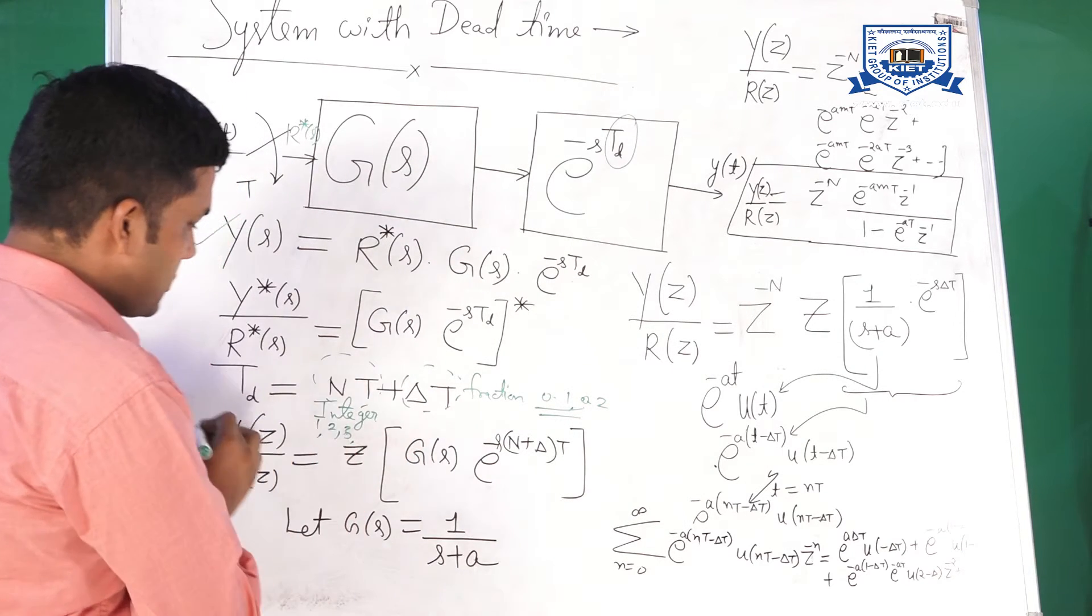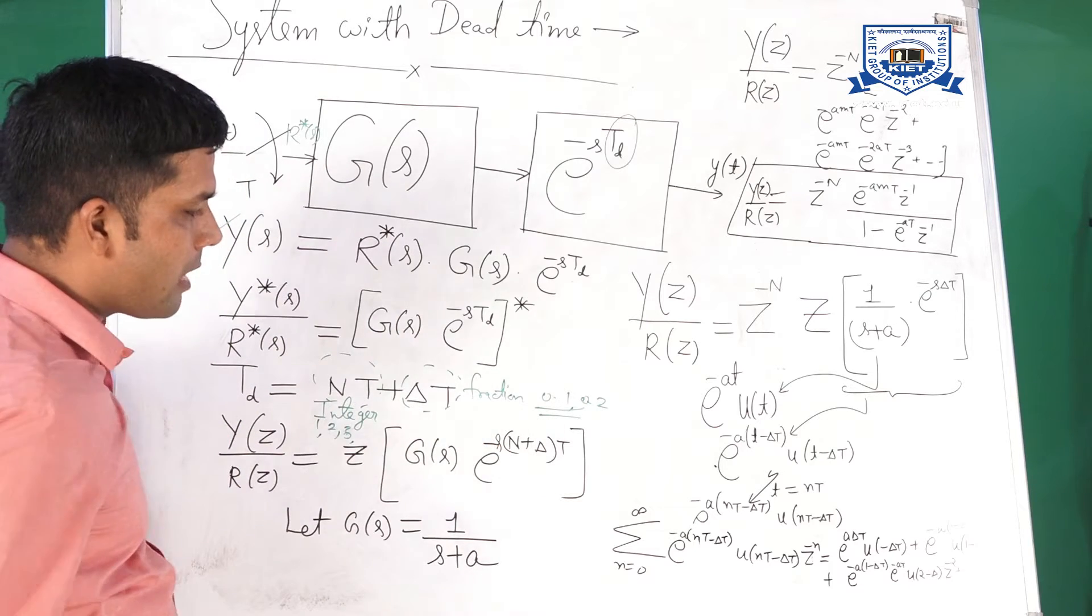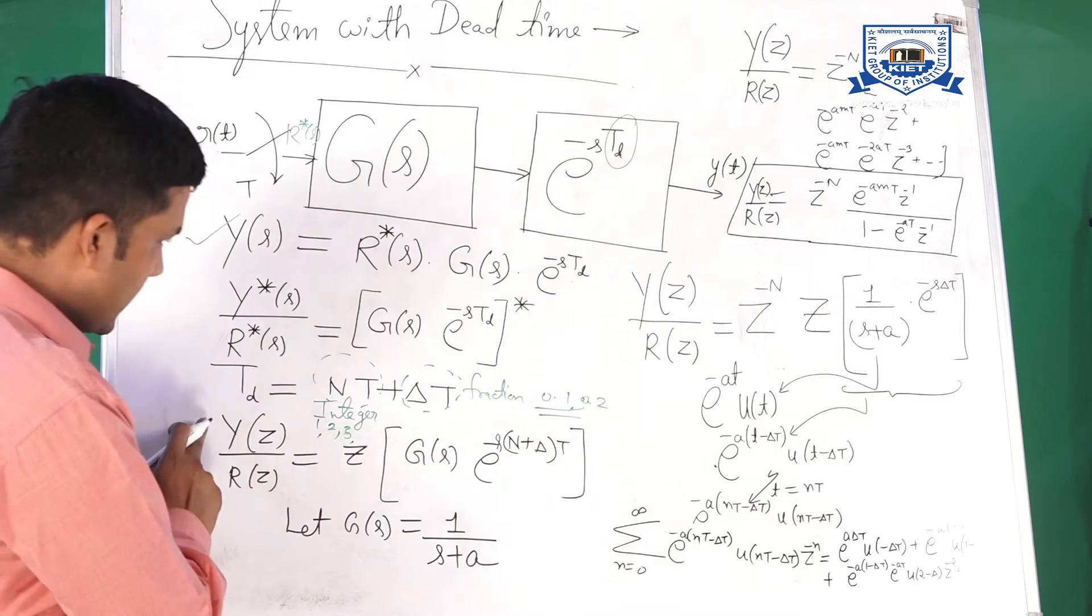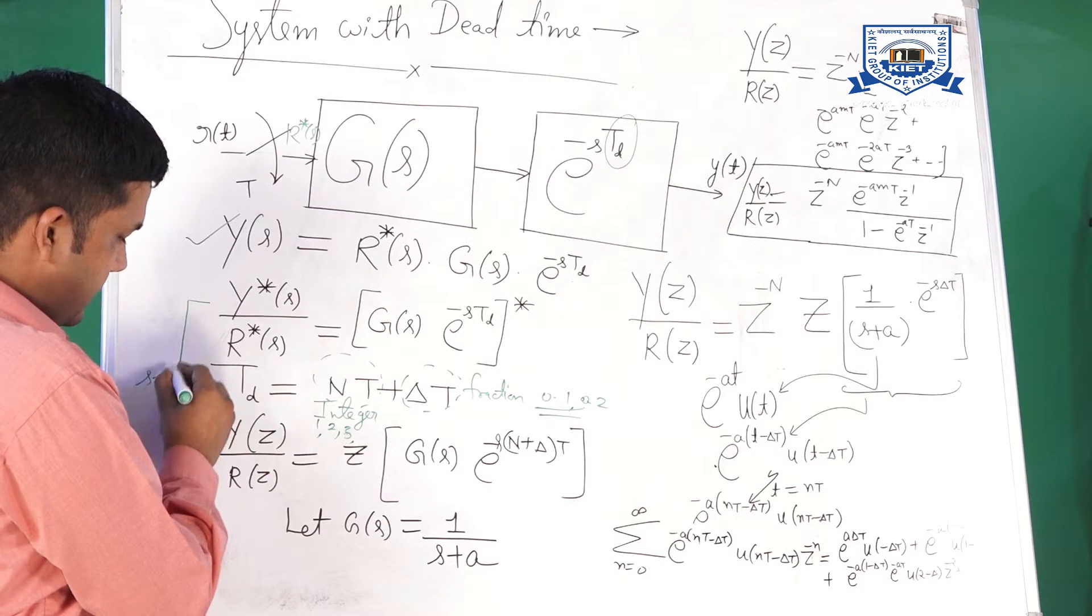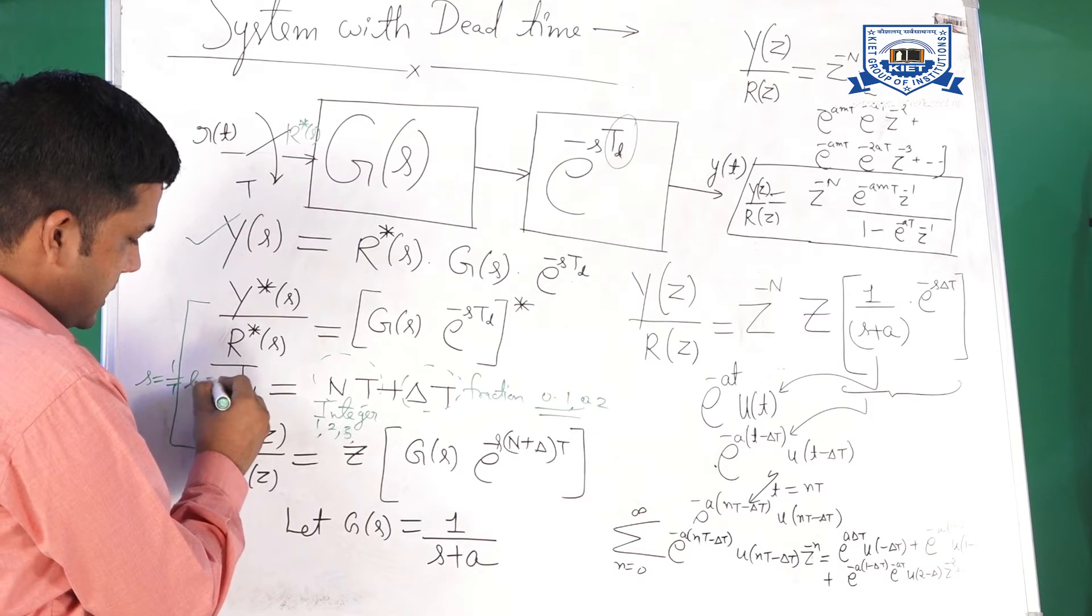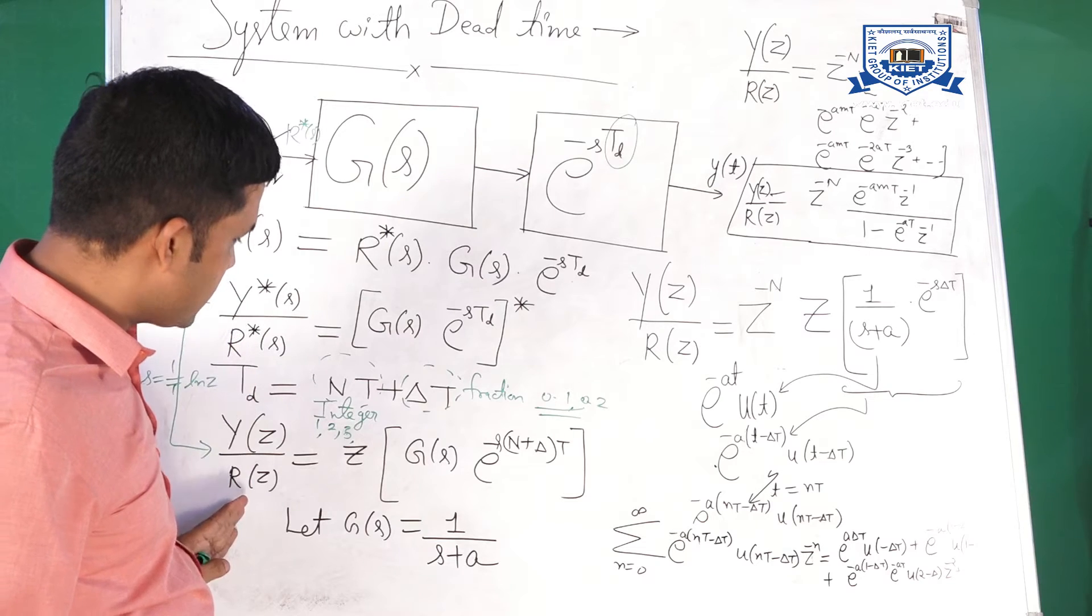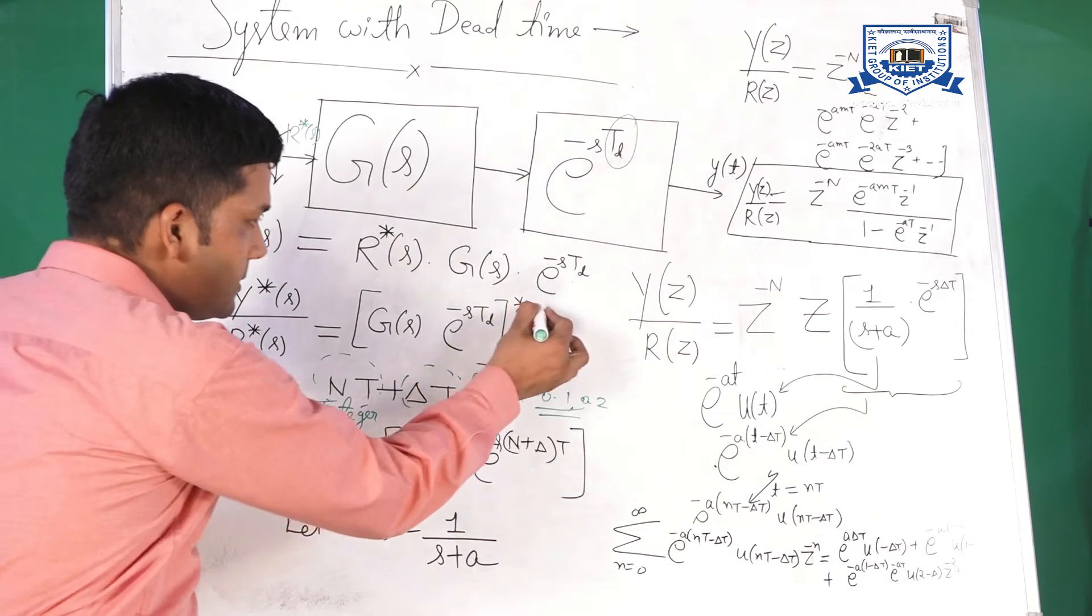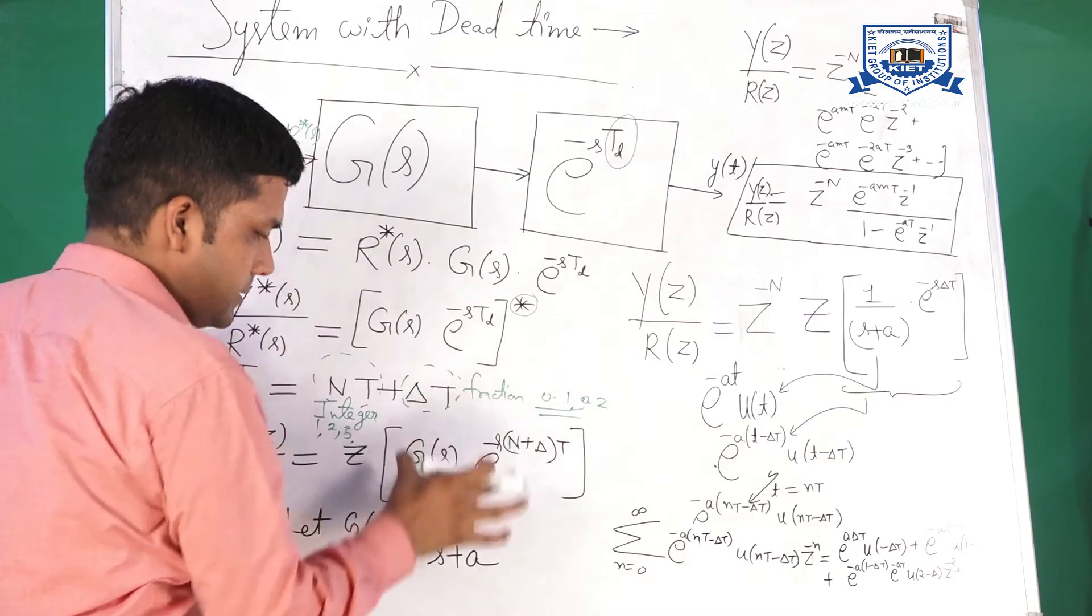If td's transportation delay is integer as well as fraction, then how to deal with the transportation delay? Ys, we have seen, after putting S is equal to 1 upon t ln z, Y star s is Yz, R star s is Rz. This is pulse function and this is z function. And this will be converted into Z transform of this quantity.